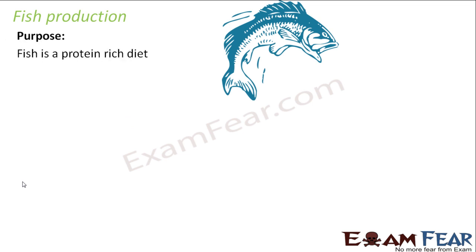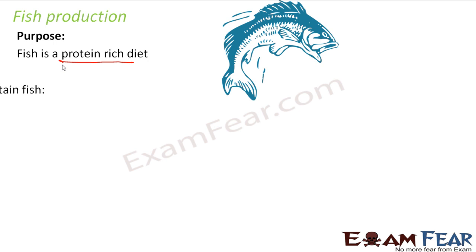The purpose of fish production is that fish is a protein-rich diet. It has a lot of protein. Those who are non-vegetarian often prefer eating more fish because it is the healthiest of all, as it has a lesser content of fat and more protein. So it is a protein-rich diet.